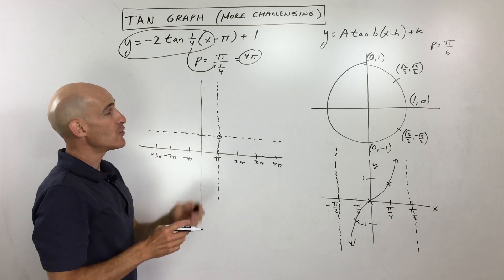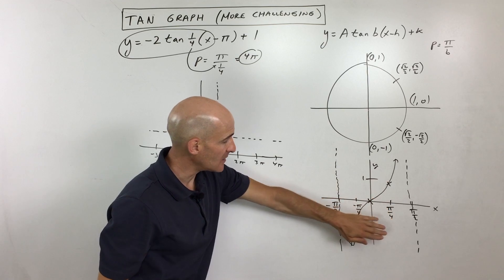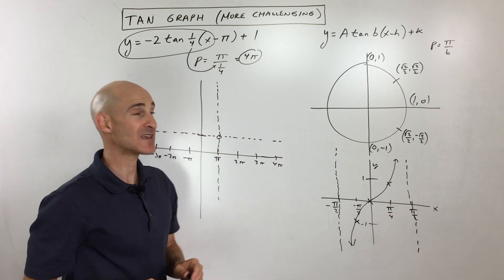And you see the negative value? What that does is it makes all the positive y values negative. All the negative ones positive, so it reflects it over the x-axis.